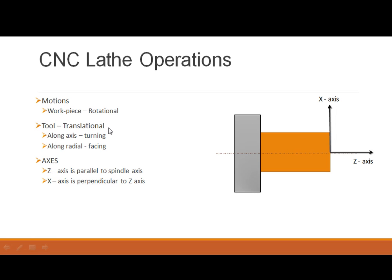The workpiece is rotating and the tool only translates. When the tool translates along the Z axis — parallel to the spindle axis — we are doing the turning operation, which reduces the diameter. When it translates in the perpendicular or radial direction along X, we are doing the facing operation, which reduces the length of the workpiece.